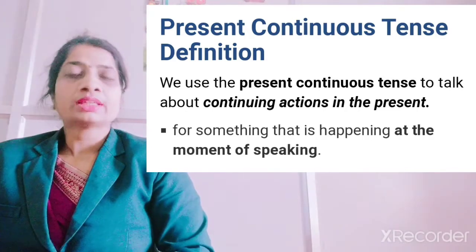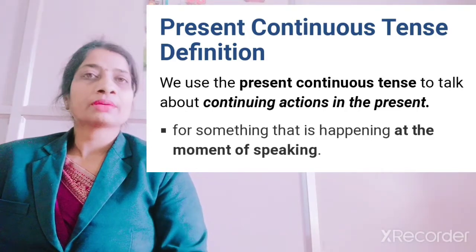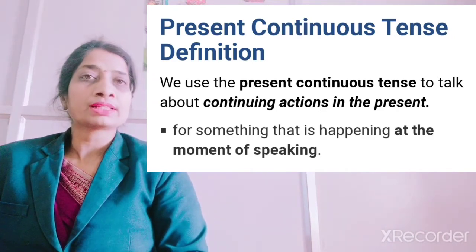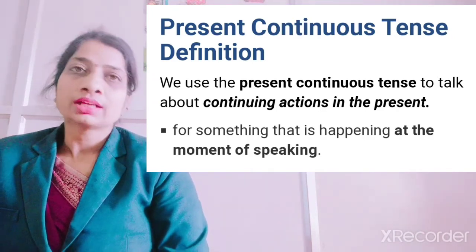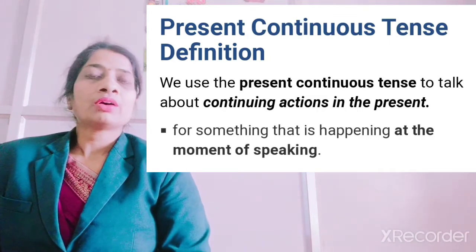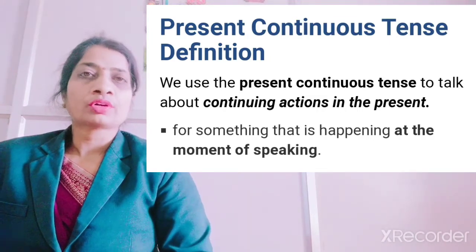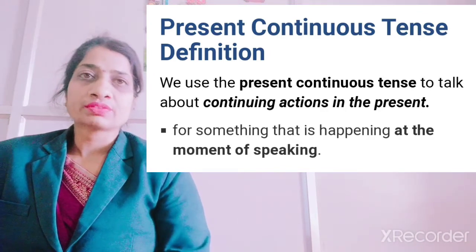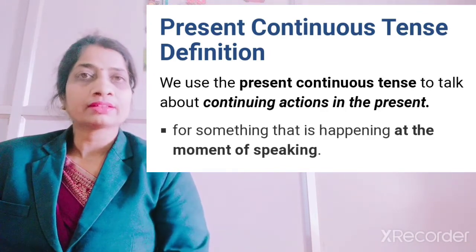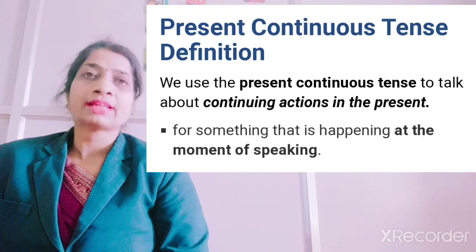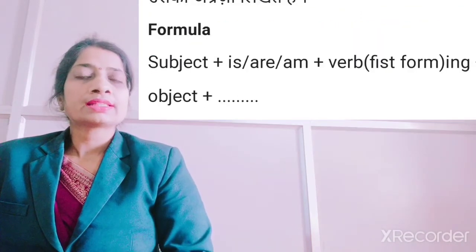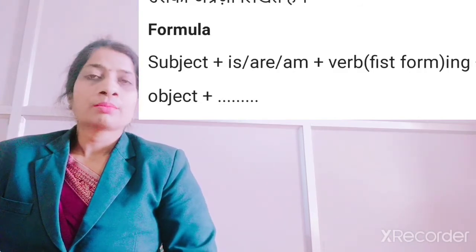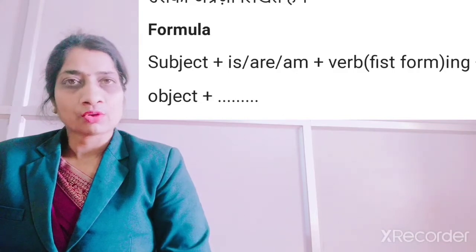Students, meaning yehi hai ki jo action aapke bolte time, jab aap bol rahe ho, us samay jo action chal raha hota hai, woh present continuous tense mein hi aata hai. Now there is one formula for writing this tense — jab bhi aap present continuous tense mein koi sentence frame karenge, there is a pattern. And that pattern is: subject plus is, am, or are, plus ing form of verb, plus object.